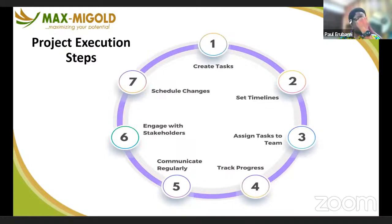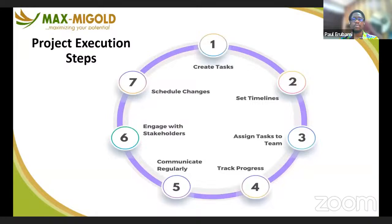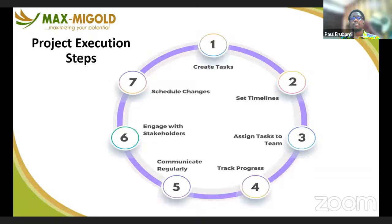Next, you allocate timelines to the set of tasks you have created, then assign tasks to teams. While assigning those tasks to teams, you also look for team heads for each of the different tasks. You create a tracker to track progress, and communicate regularly with stakeholders and team members. You must also engage with stakeholders regularly and ensure that as tasks are completed, you create more tasks so the cycle continues and the project moves toward completion.